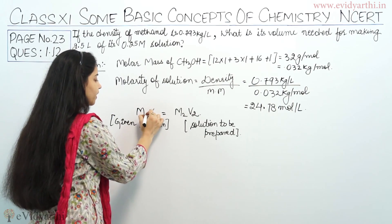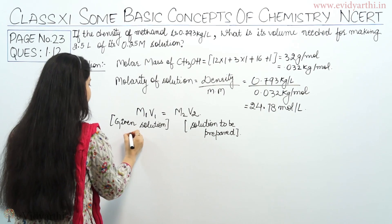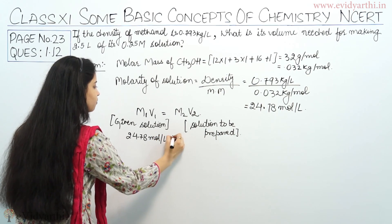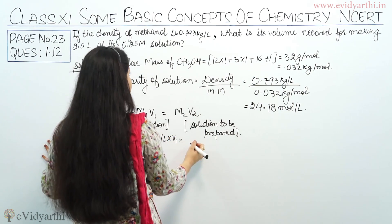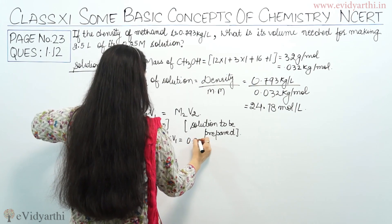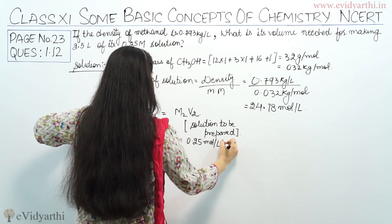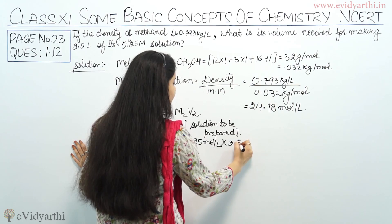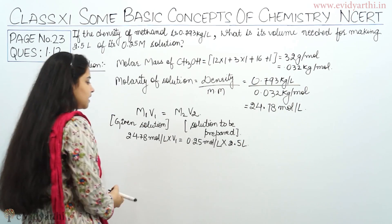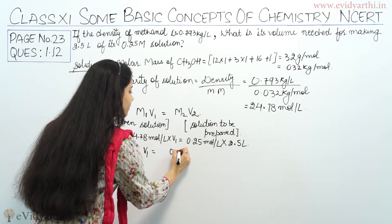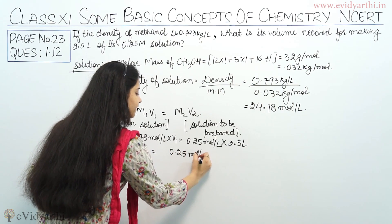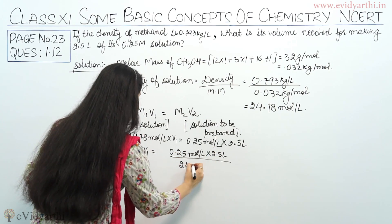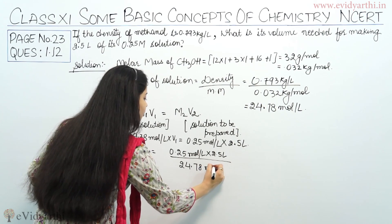M1 is given — we have calculated it as 24.78 moles per litre. So: 24.78 moles per litre × V1 = M2, which is 0.25 moles per litre, × V2, which is 2.5 litres. Therefore V1 = 0.25 × 2.5 divided by 24.78 moles per litre.